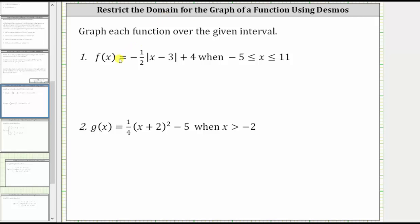For number one, we have f(x) equals negative 1½ times the absolute value of the quantity x minus 3 plus 4 when x is greater than or equal to negative 5 and less than or equal to 11.